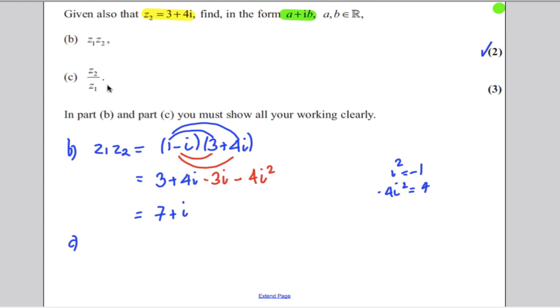Part C, we're asked to work out z2 divided by z1. So z2 divided by z1 must be 3 plus 4i over 1 subtract i.